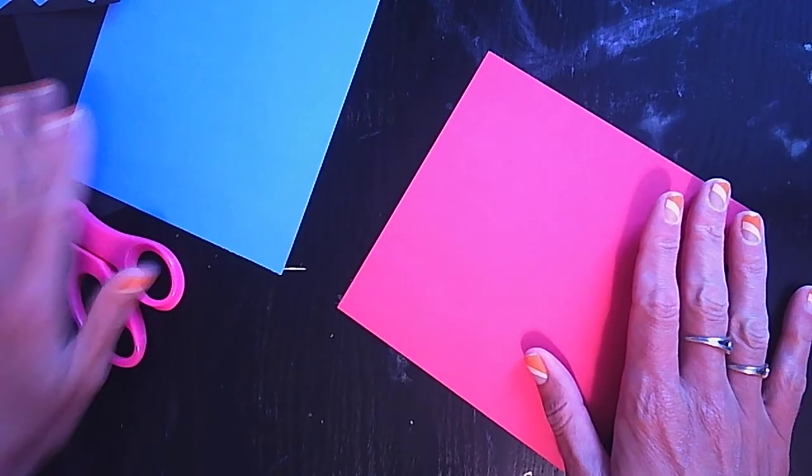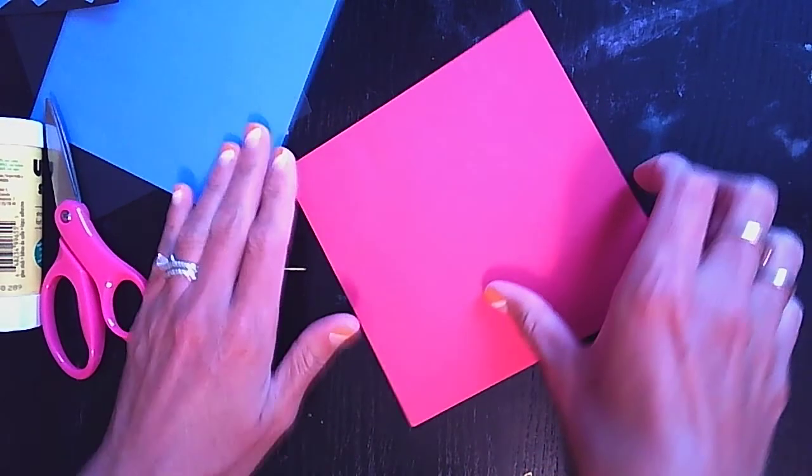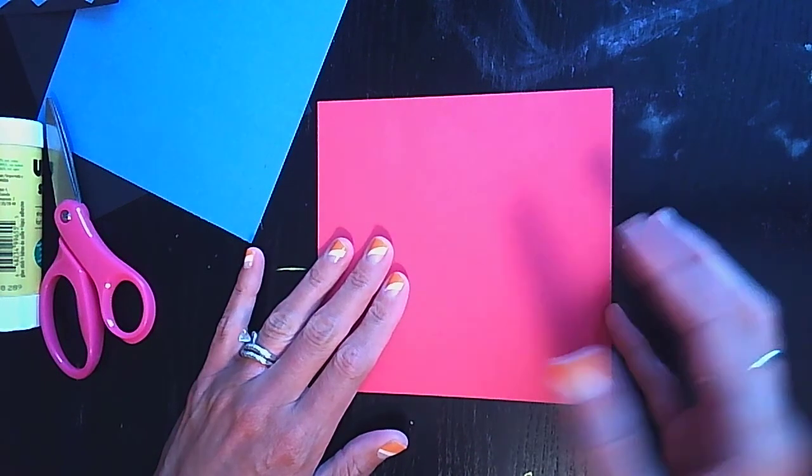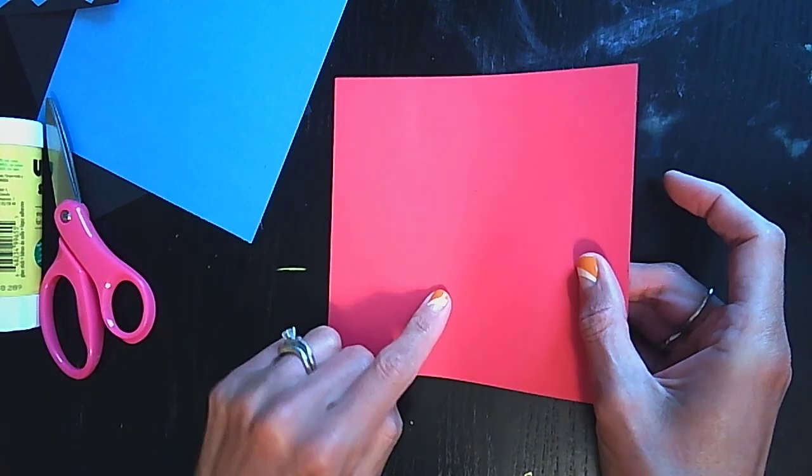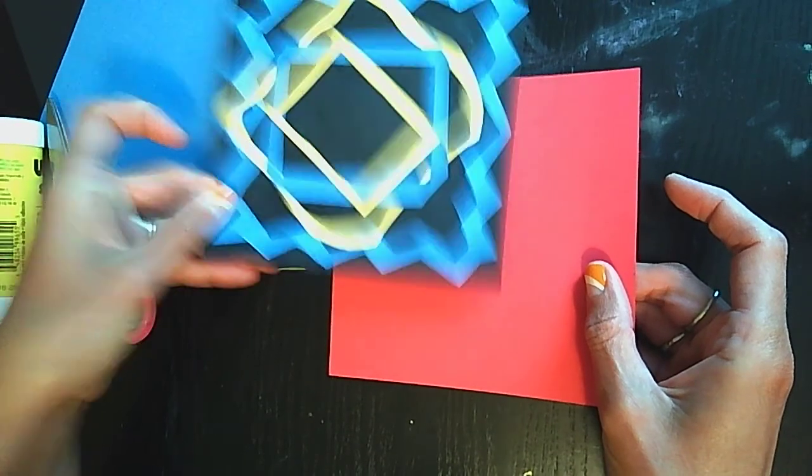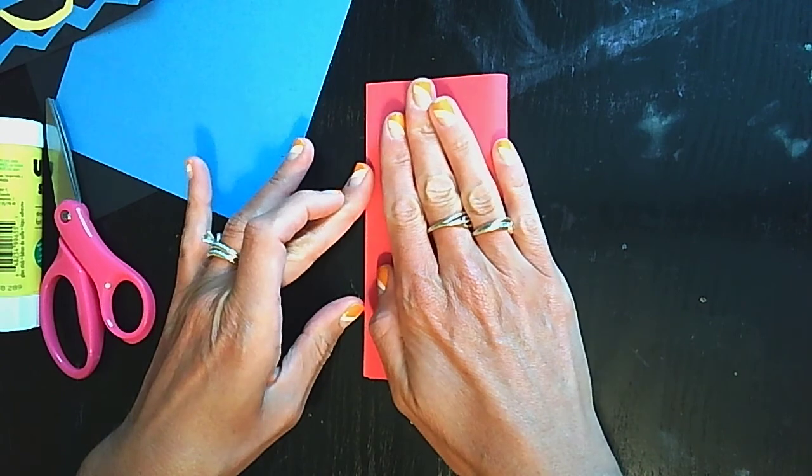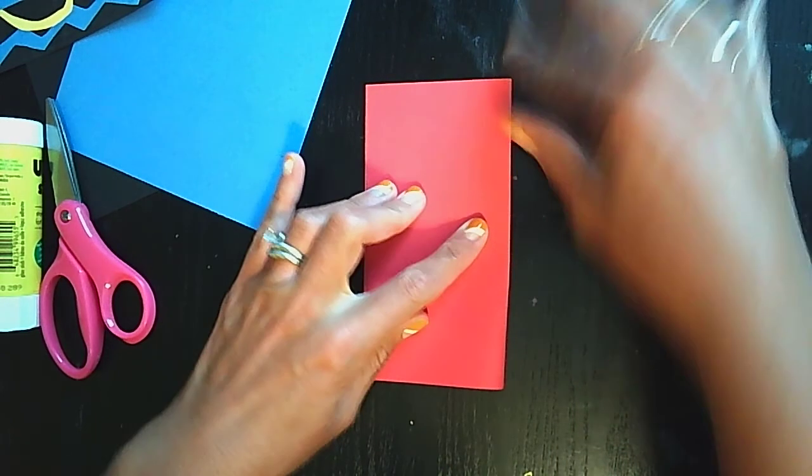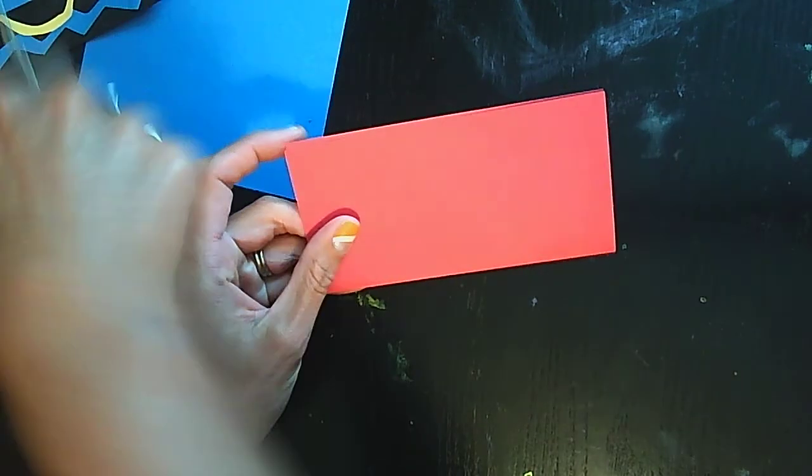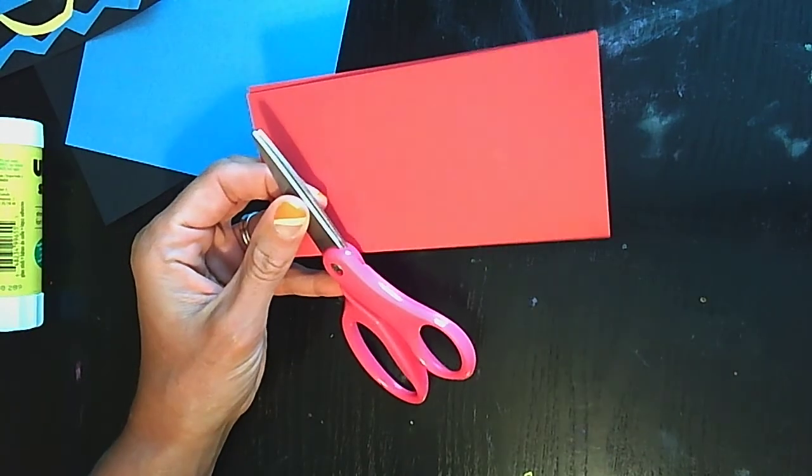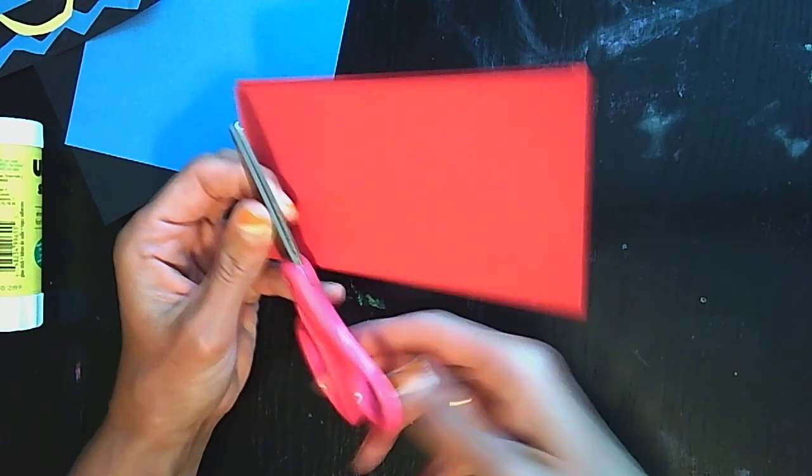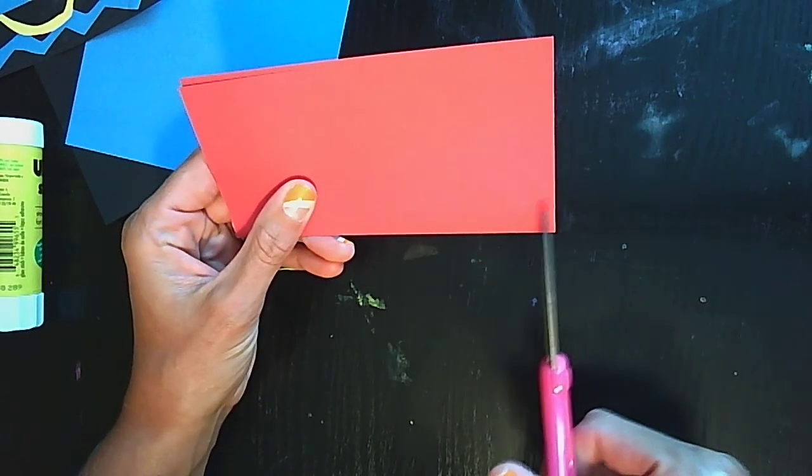Alright, so what we're going to do is we're going to put these to the side and we are going to get one piece of paper. What we're going to do is we are going to create squares, different shaped squares, and we're going to attach them onto our black paper creating a really cool design. So the easy way to do that, you're going to fold this in half, crease with your fingertips. You're going to get your pair of scissors and I have a really cool hot pink pair of scissors here.